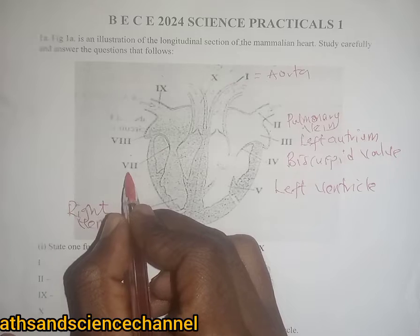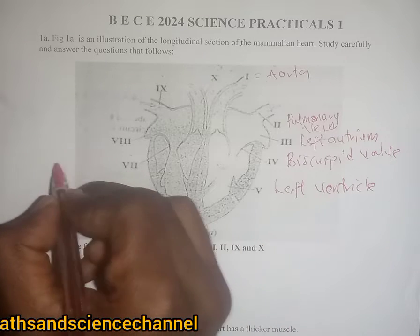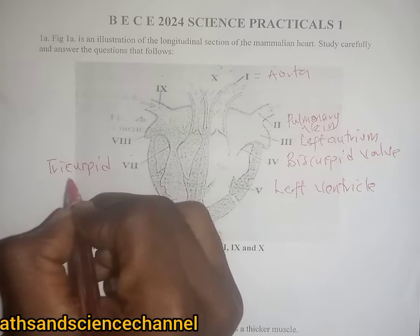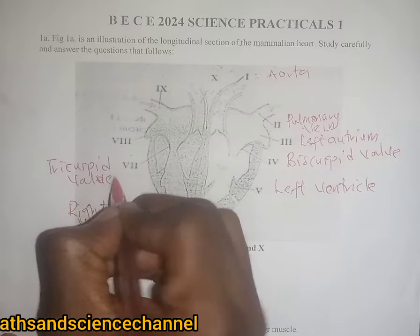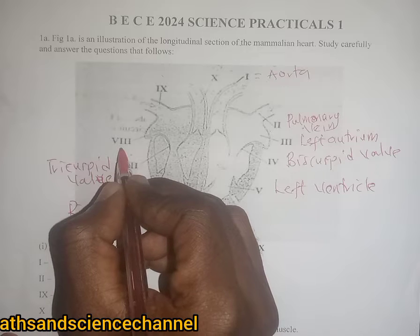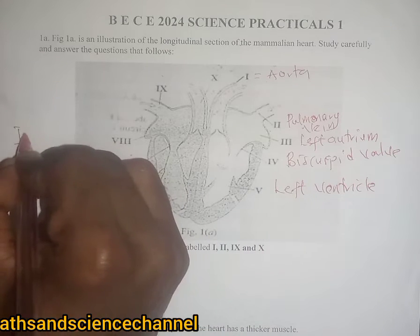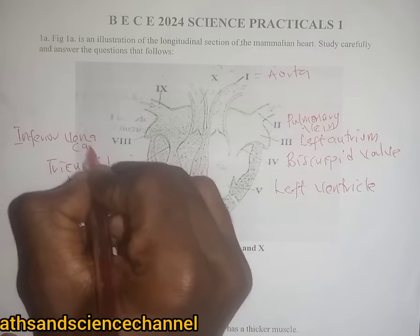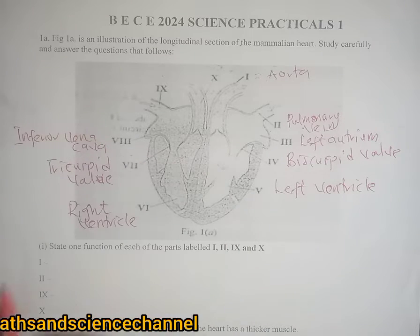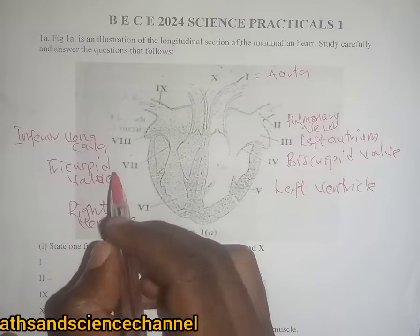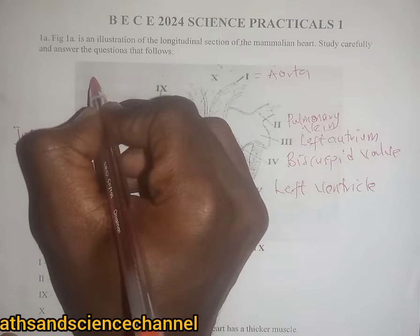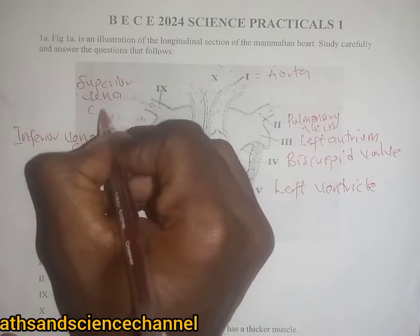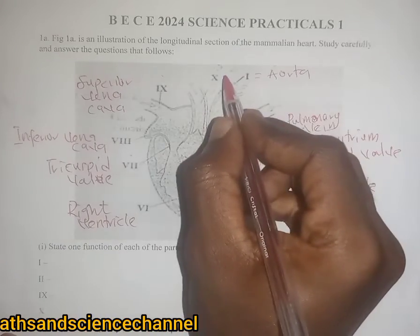Part vi is the right ventricle. Part vii is what we call the tricuspid valve. Part viii is what we call the inferior vena cava. Part ix here is the superior vena cava.